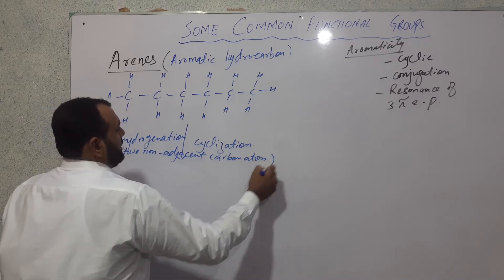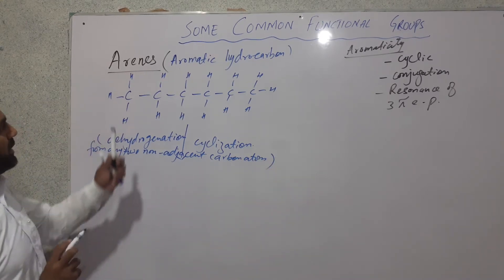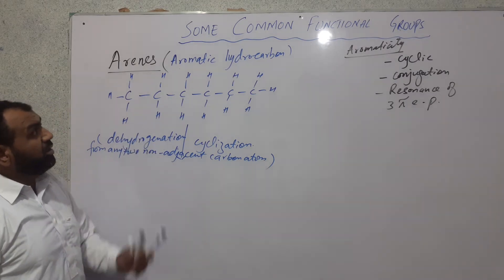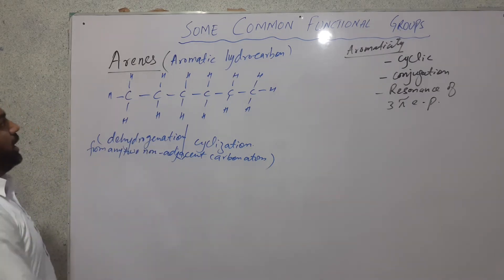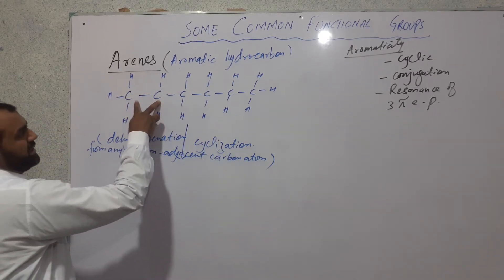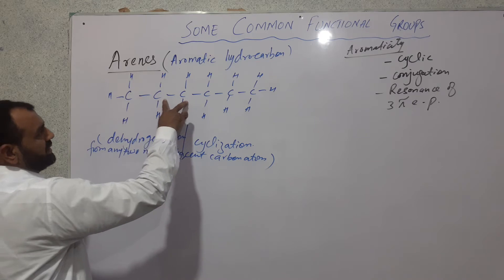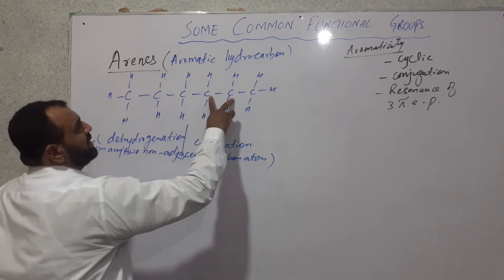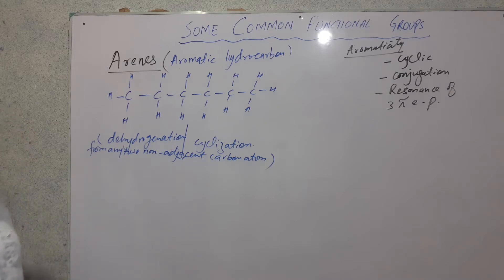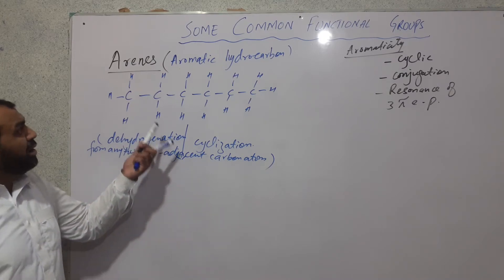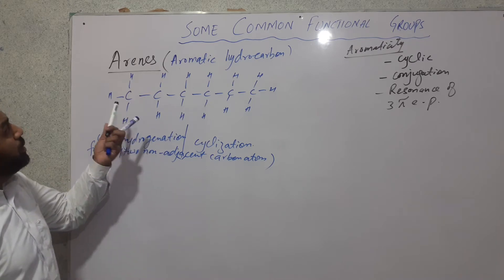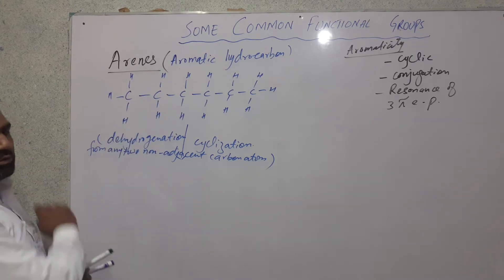Dehydration means the removal of hydrogen from a compound. Carbon one and two are adjacent, two and three are adjacent, three and four are adjacent, and so on — four-five and five-six are all adjacent carbon atoms. When we remove hydrogen from adjacent carbon atoms, that results in a multiple bond, that is, unsaturation.